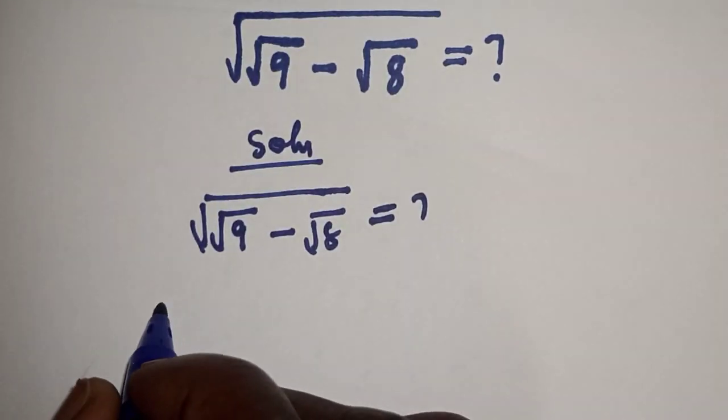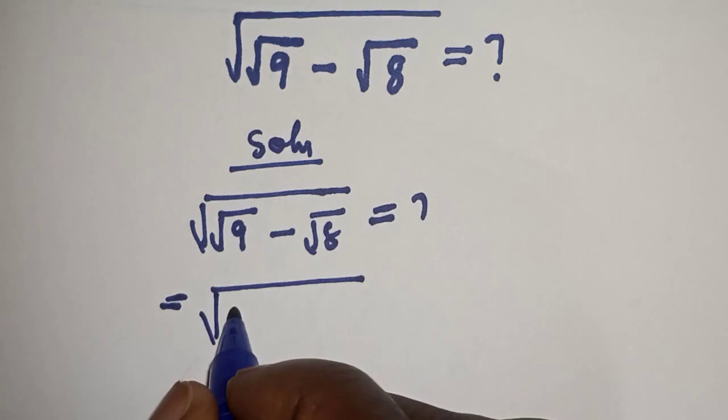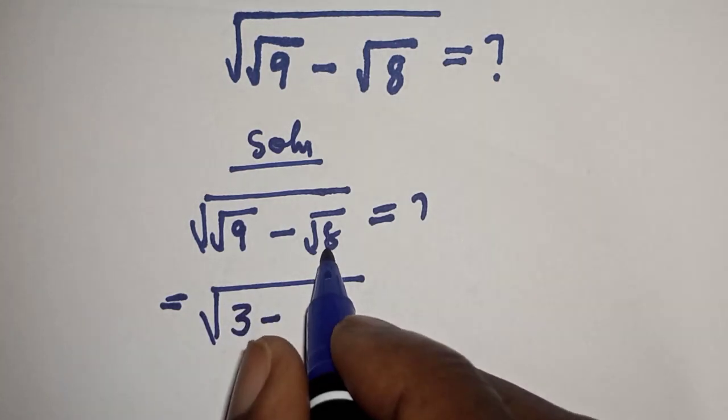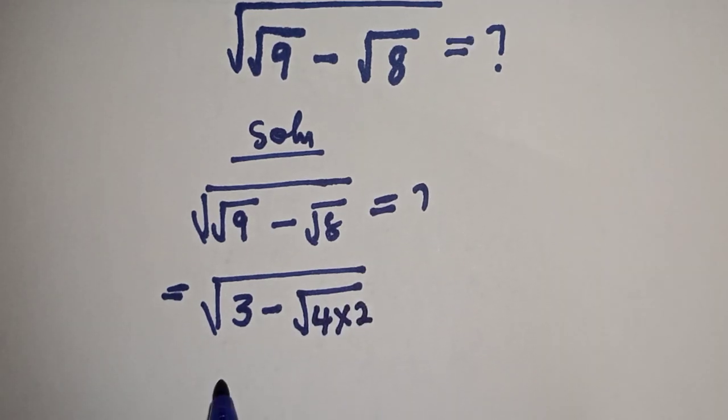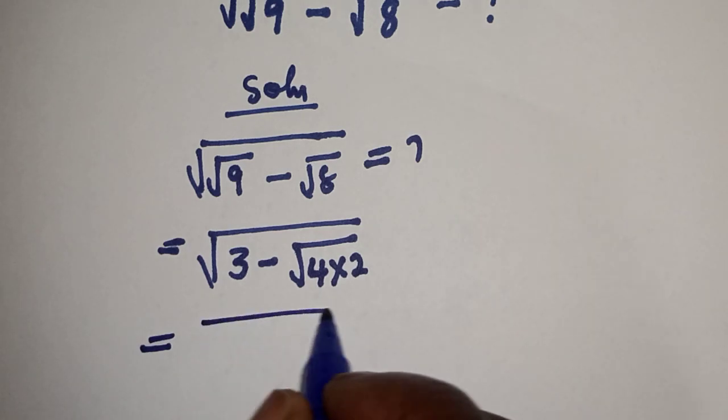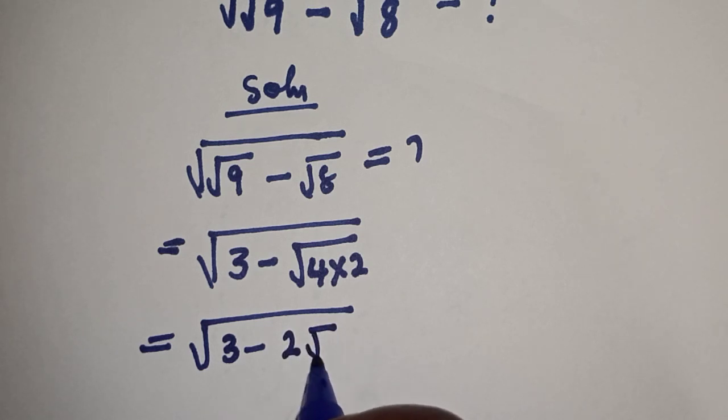This is equal to square root of, square root of 9 is 3, minus square root of 8 can be written as root of 4 multiplied by 2. Equal to square root of 3 minus square root of 4 is 2 root 2.